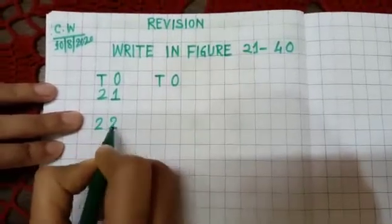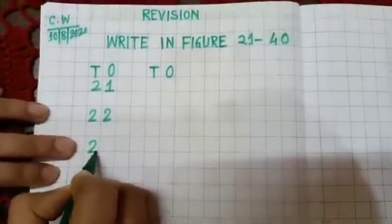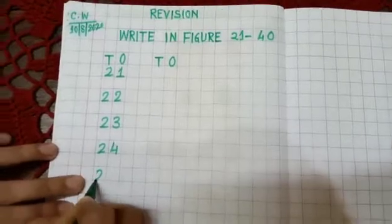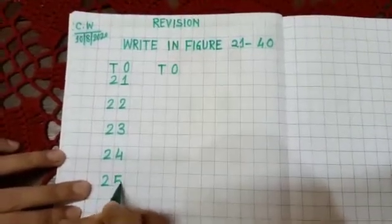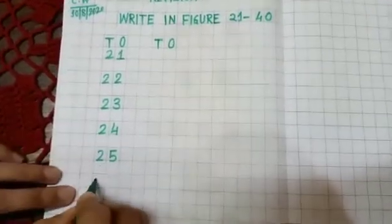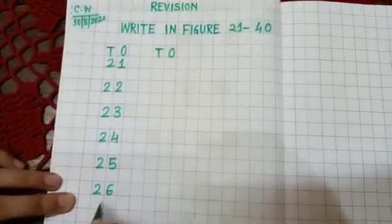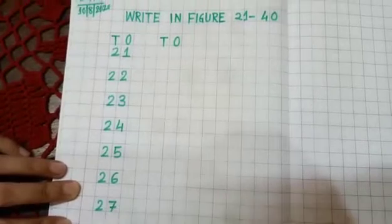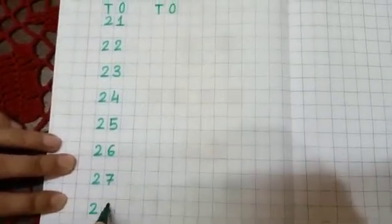Okay children, now start writing 2, 1, 21, 2, 2, 22, 2, 3, 23, 2, 4, 24, 2, 5, 25, 2, 6, 26, 2, 7, 27, 2, 8, 28.